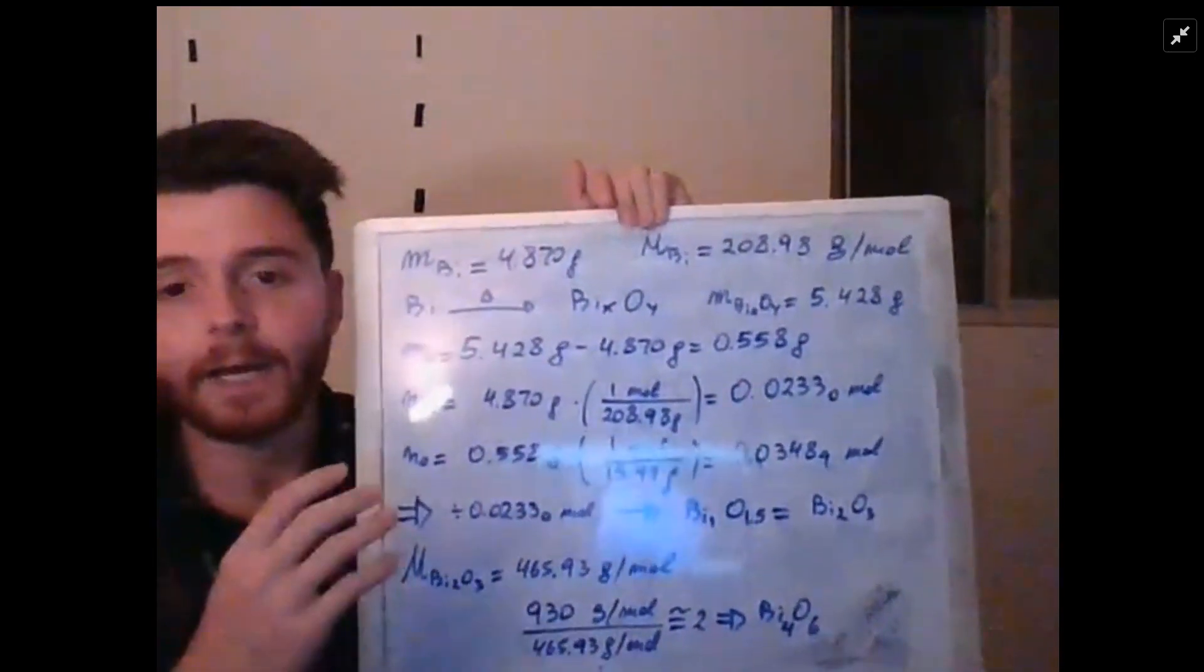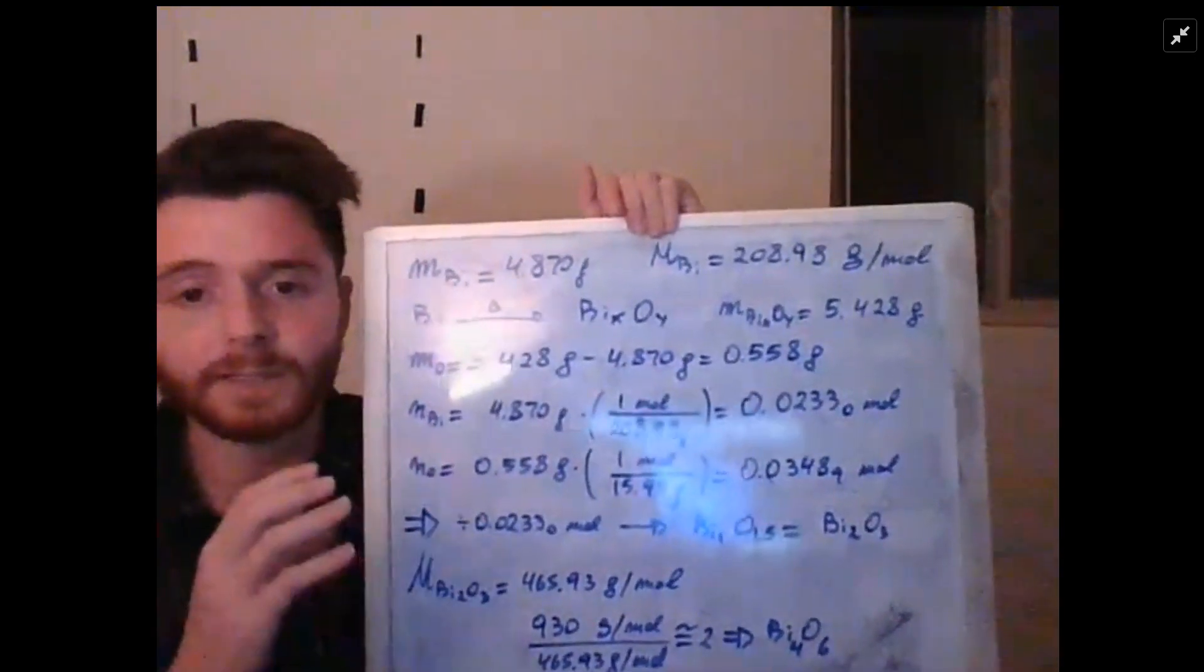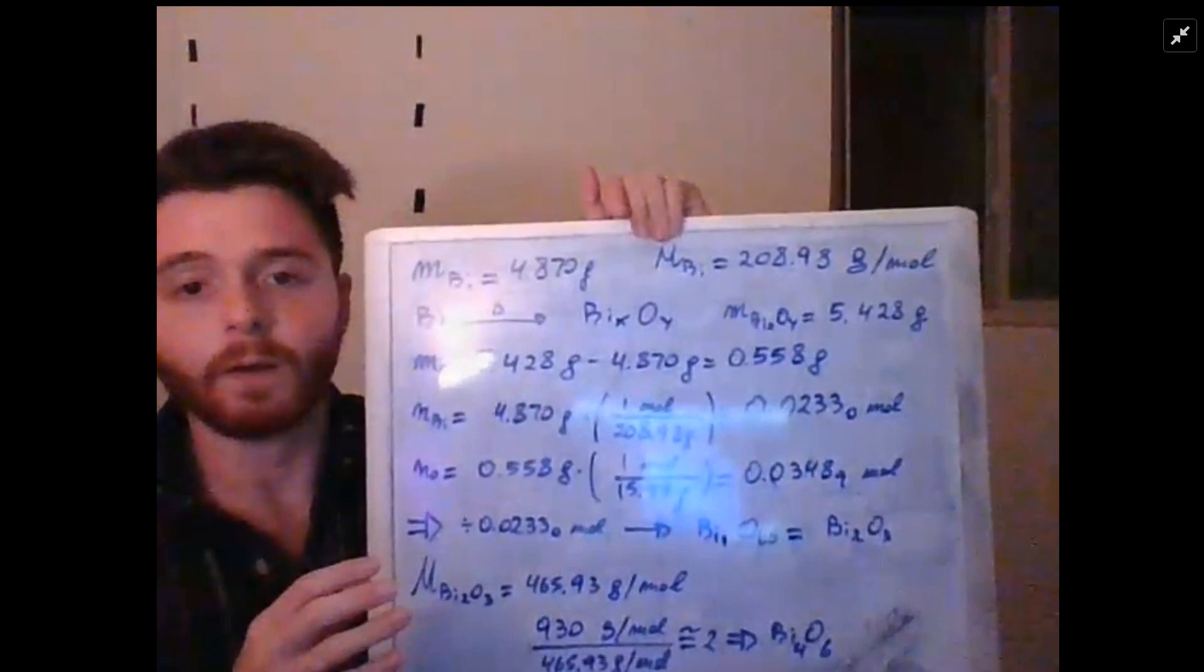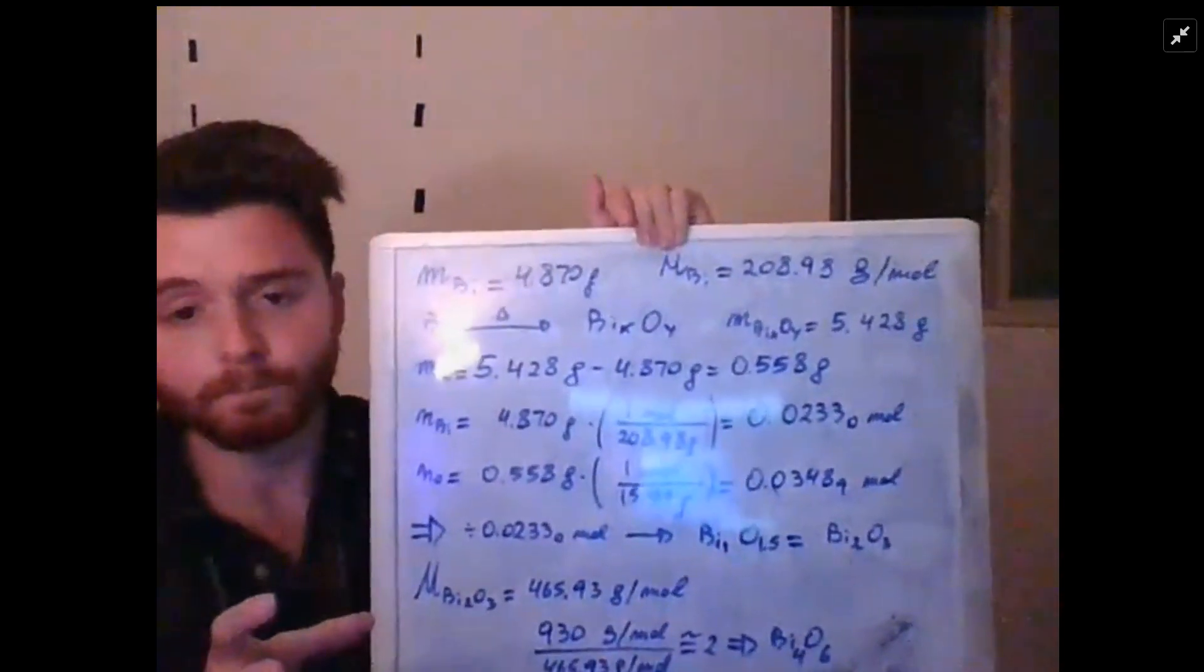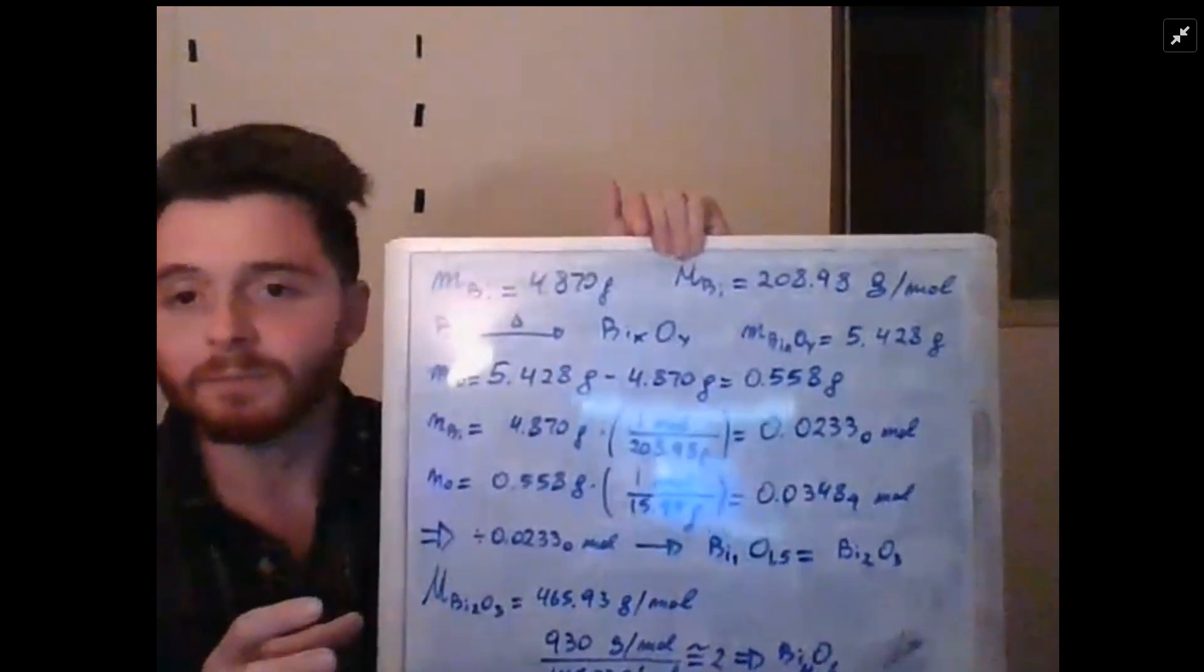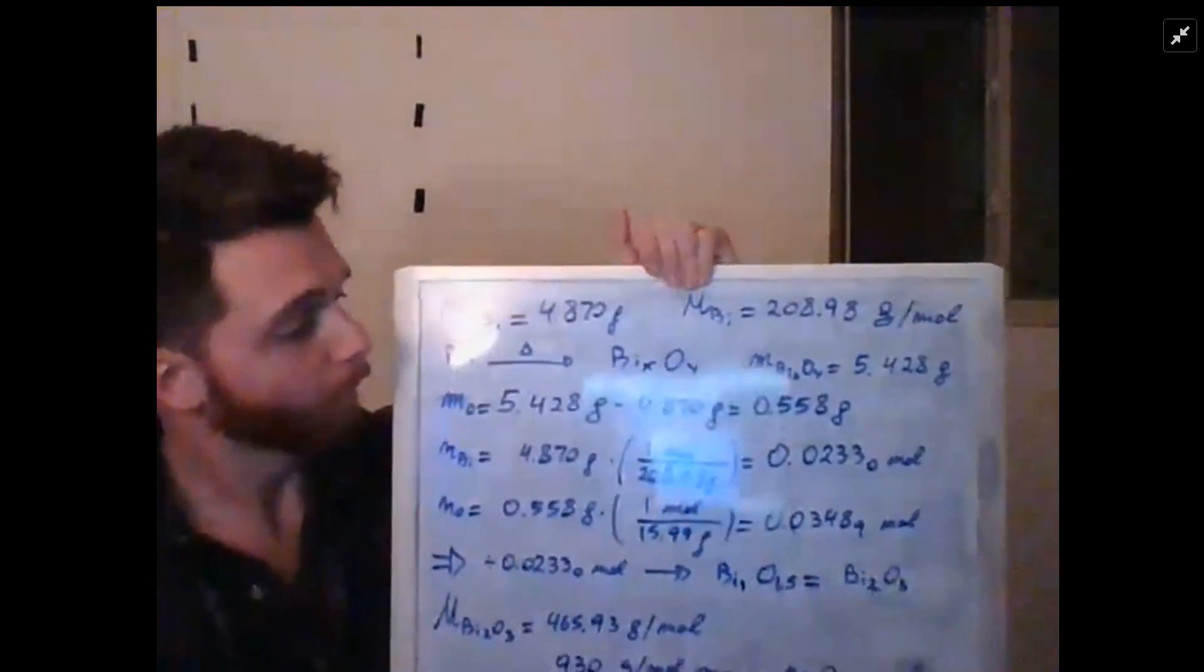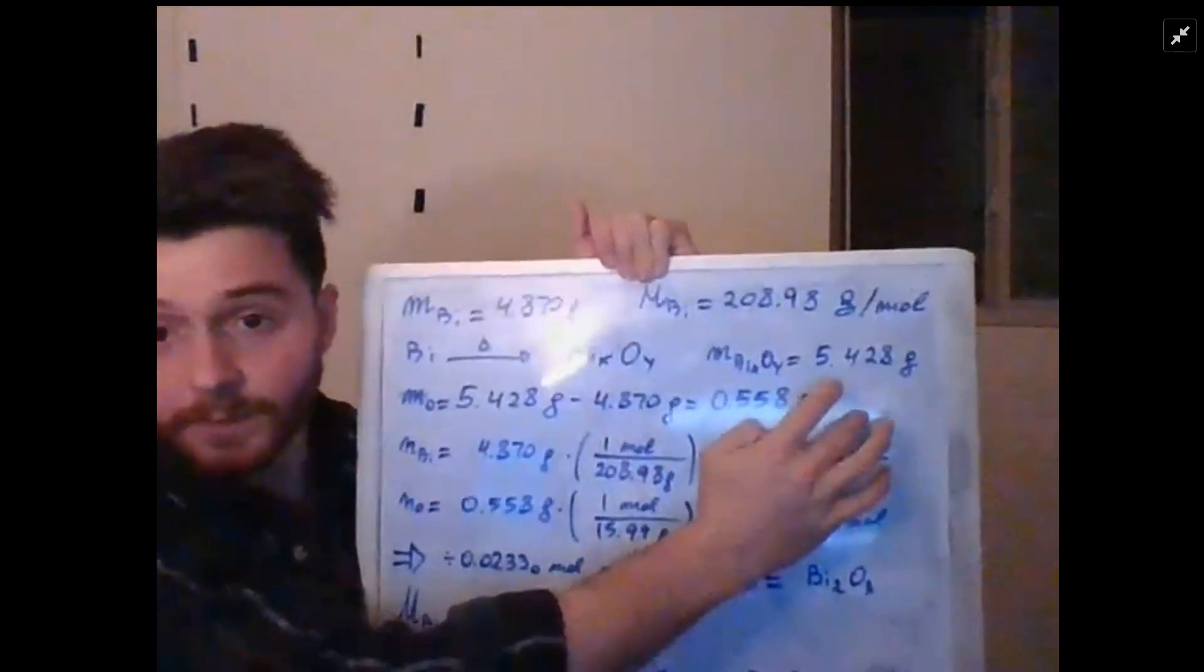All the intermediate values in between you can keep as many as you want. These are the grams of oxygen.